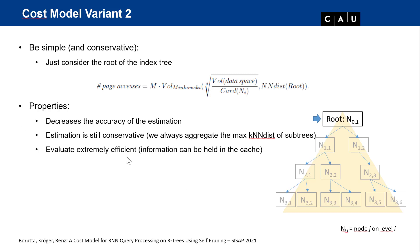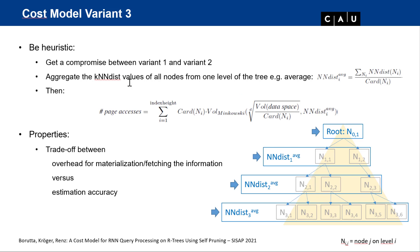The third variant is a compromise: we aggregate the k-NN distance values of all nodes from one level of the tree. For example, using two nodes at the first level, we take their average k-NN distance — though minimum or maximum could also be used. The cost model formula is given accordingly. This trades off materialization overhead against estimation accuracy.